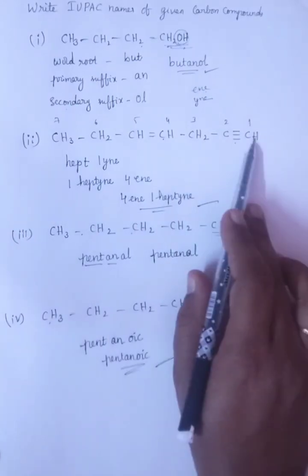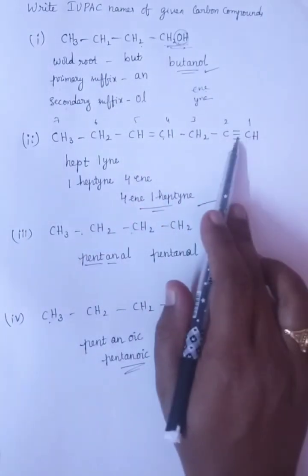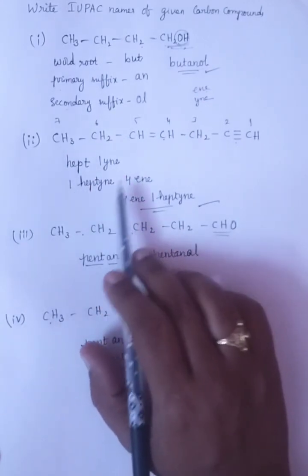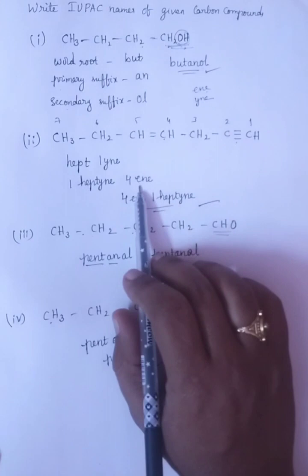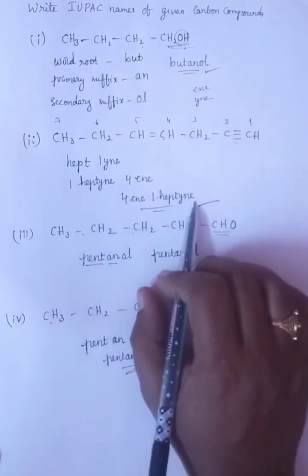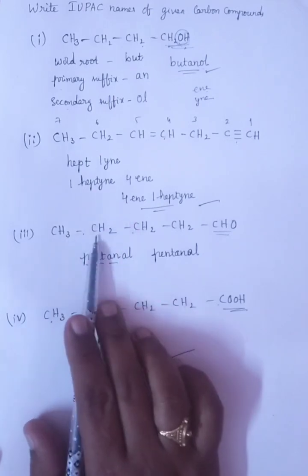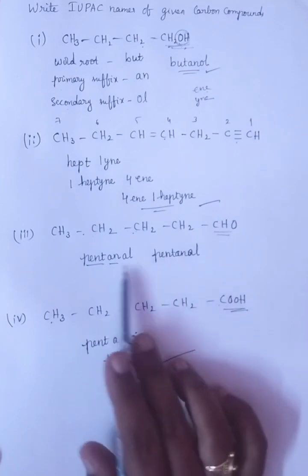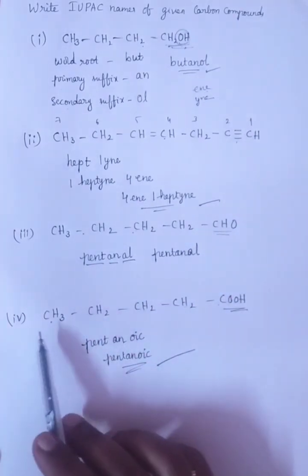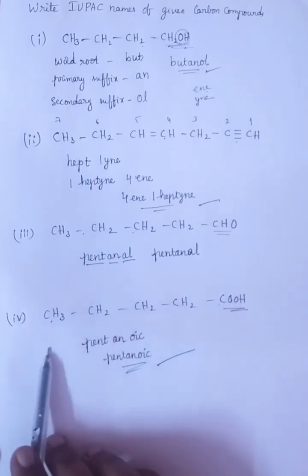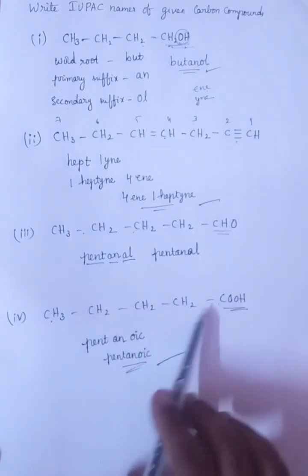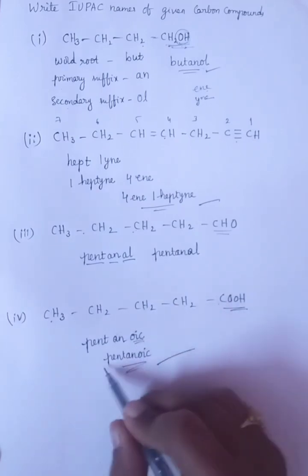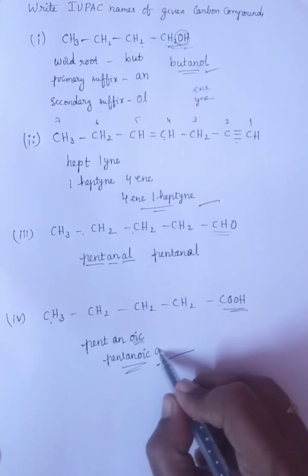This is seven carbons, HEPT. Triple bond at first, so that's why IN. HEPT-1-IN, or we can write it as 1-heptyne. At fourth place, here double bond, so that's why IN. 4-IN-1-heptyne. Next, number of carbons 5, that is PENT, single bond AN, and aldehyde, so that's AL. Here 1, 2, 3, 4, 5 - five carbons and single bond. COOH is the functional group. For this, we will write the secondary suffix as OIC acid. So that's why the name will be pentanoic acid.